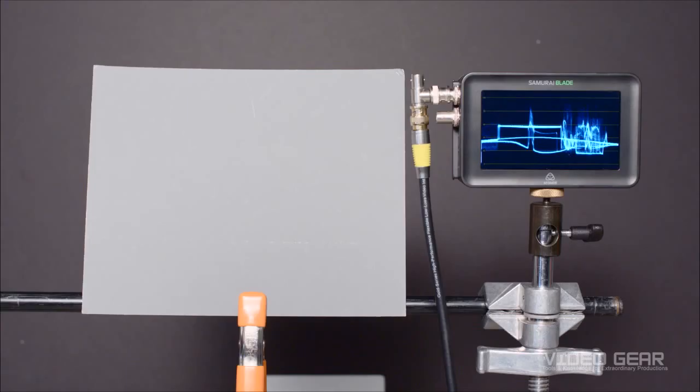So let's get started. The first thing we're going to do is place the 18% gray card in our key light and make sure it's evenly illuminated. Notice how the waveform shows a perfectly uniform level. This tells us that the card is illuminated evenly from top to bottom and side to side.